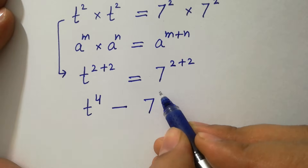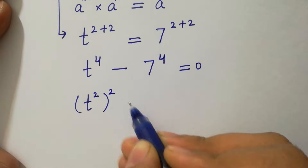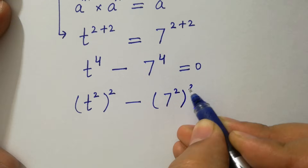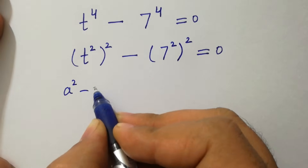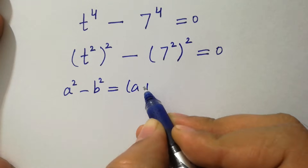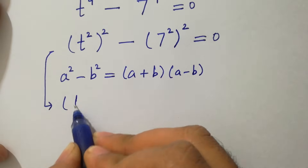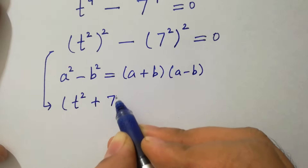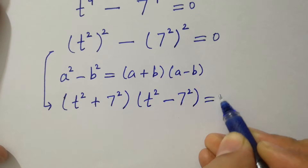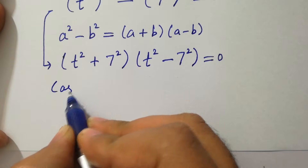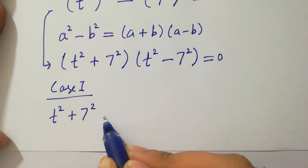t to the power 4 minus 7 to the power 4 equals 0, which is the same as (t²)² minus (7²)² equals 0, since 2 times 2 is 4. By the formula a² minus b² equals (a + b)(a − b), we apply it now: we have (t² + 7²)(t² − 7²) equals 0.